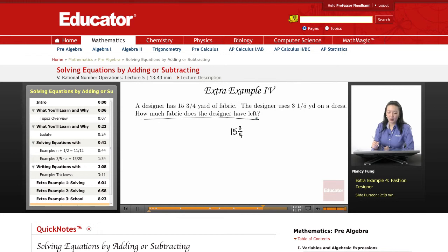So there are several ways to set up this equation. You could take out what the designer has left, and that would equal what he's used up, 3 and 1 fifths. Or you could write it very straightforward and just say 15 and 3 fourths minus 3 and 1 fifths, what he used up, leaving what's left over.